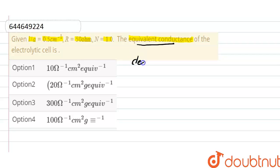And equivalent conductance is equal to specific conductivity into thousand divided by normality of the solution. So here first we'll find out specific conductivity.